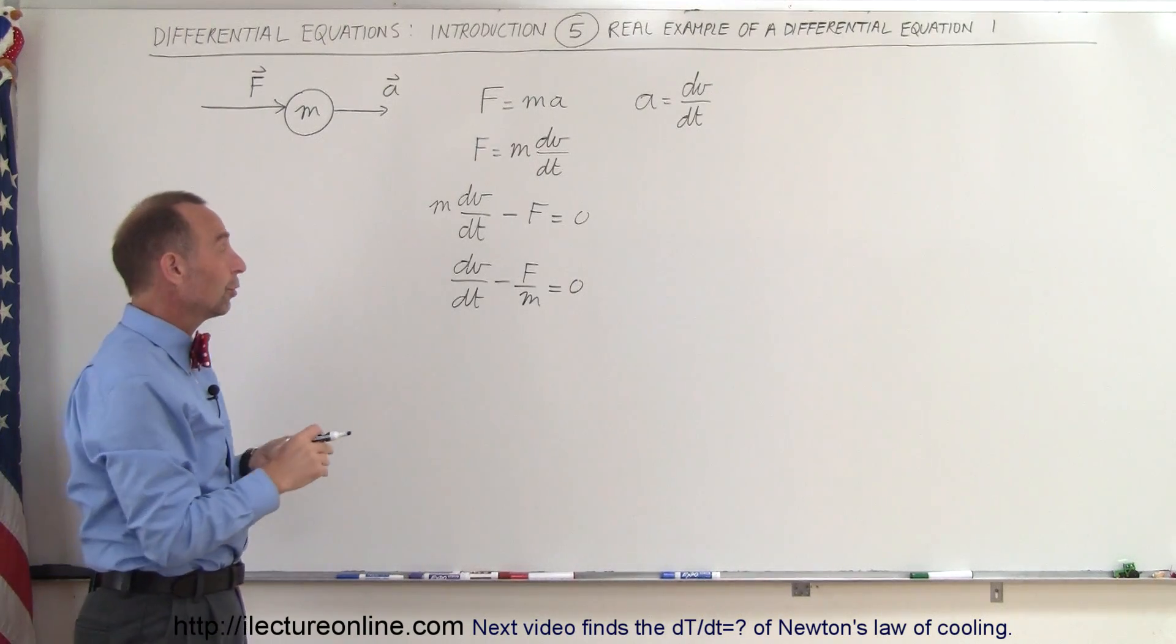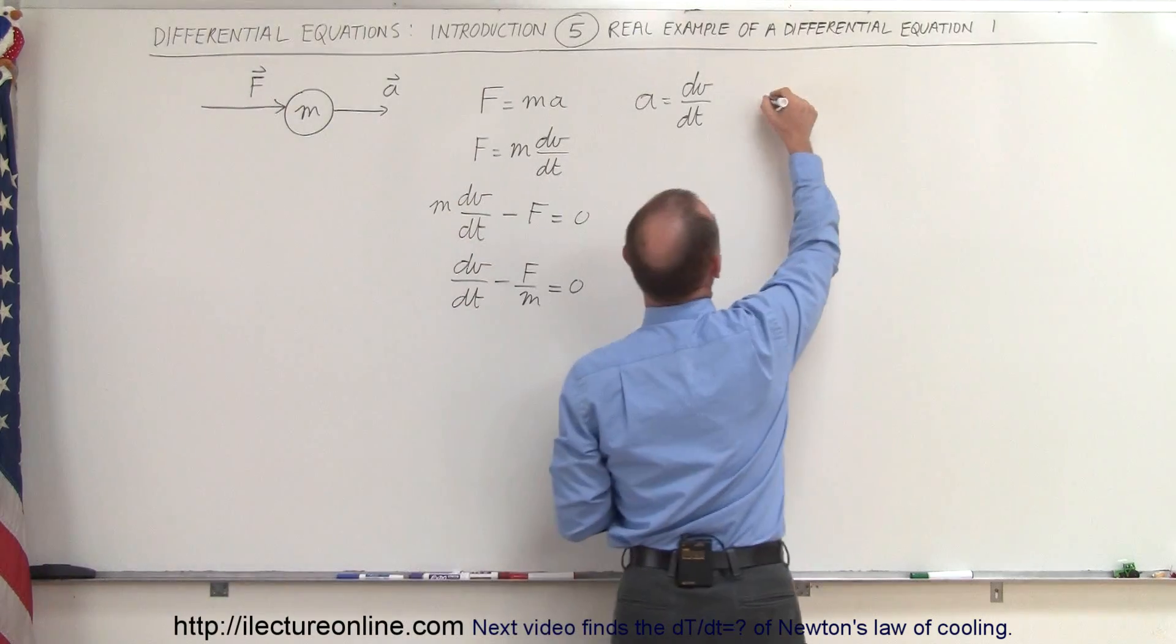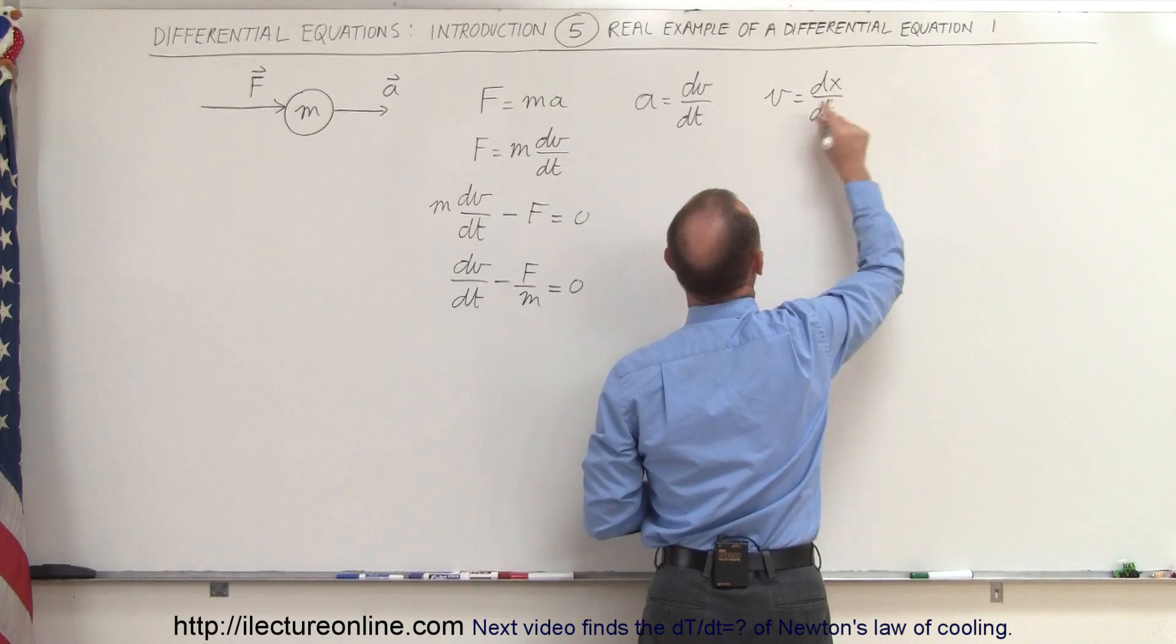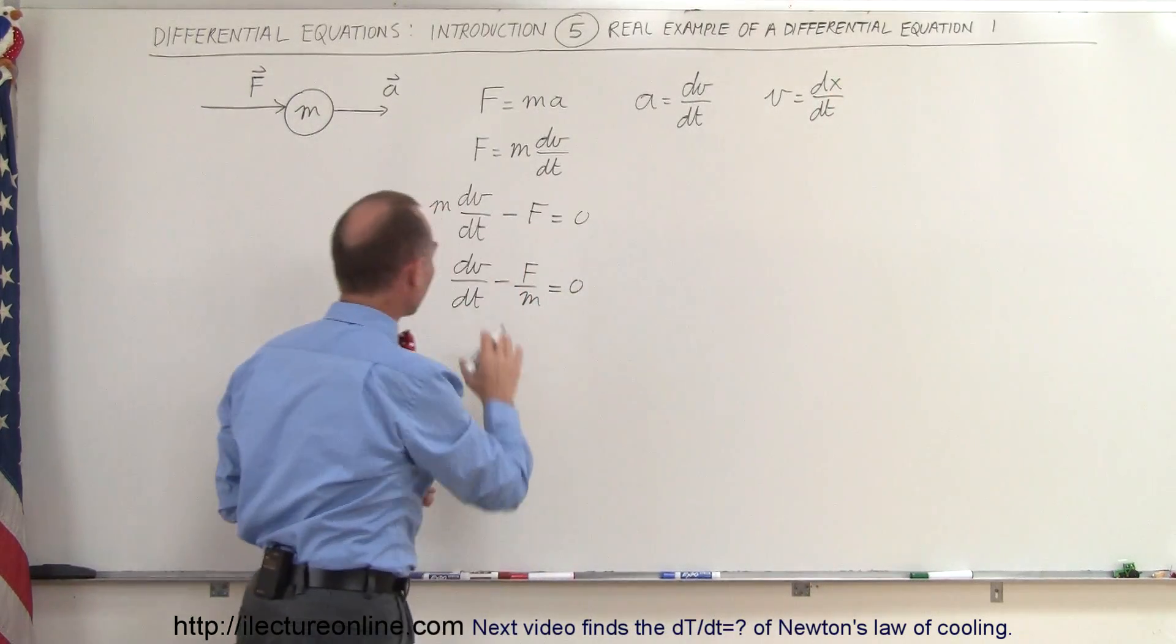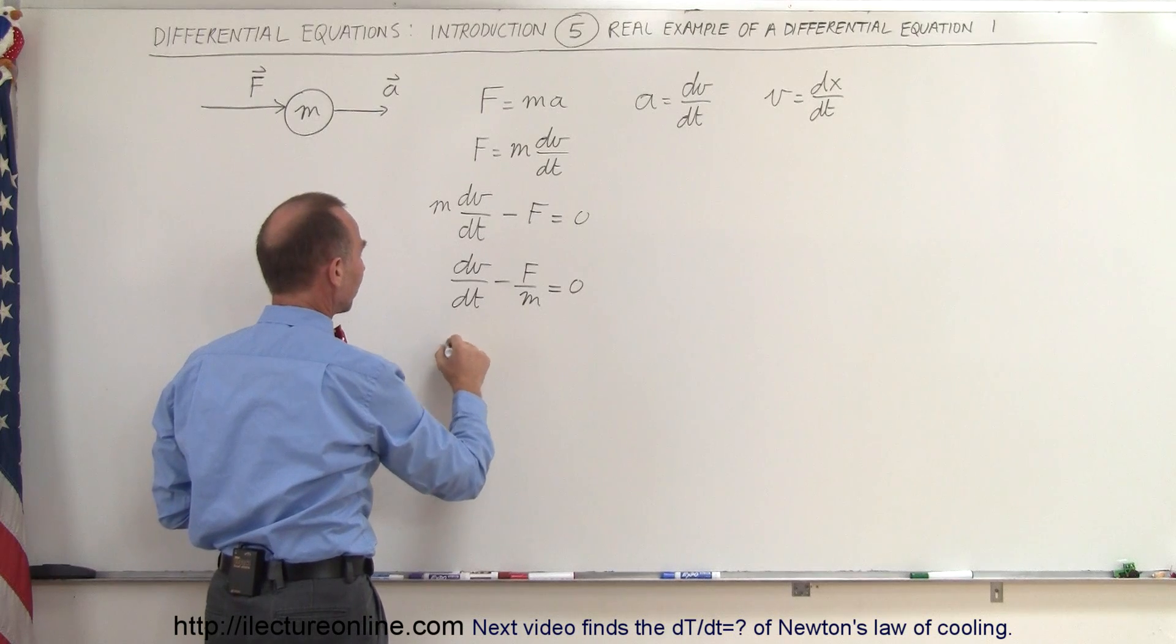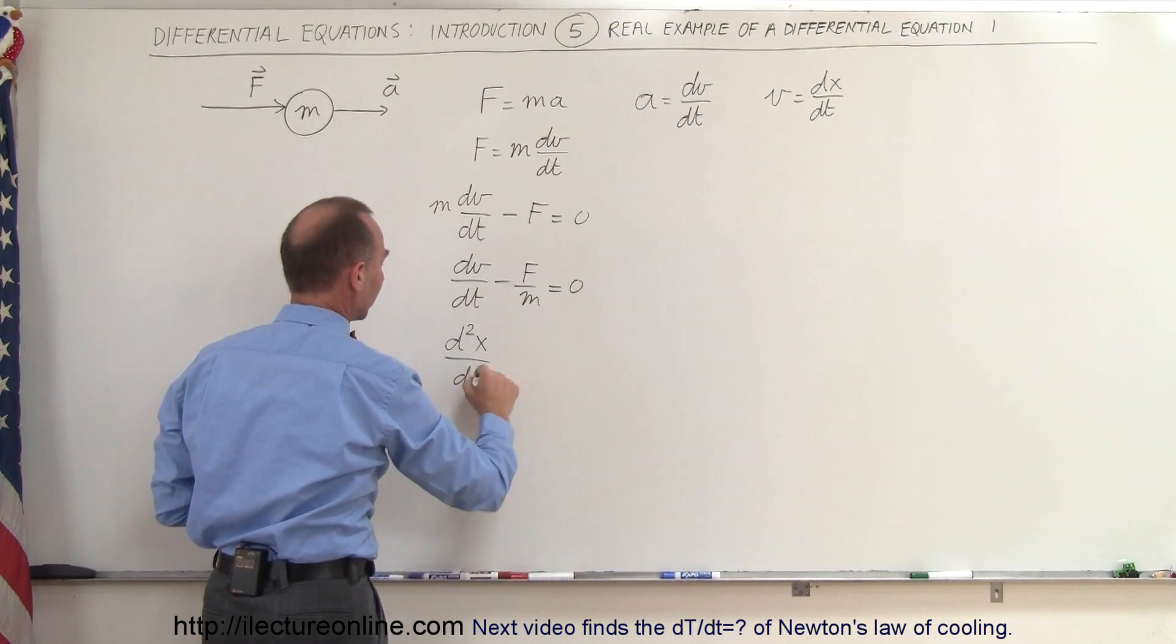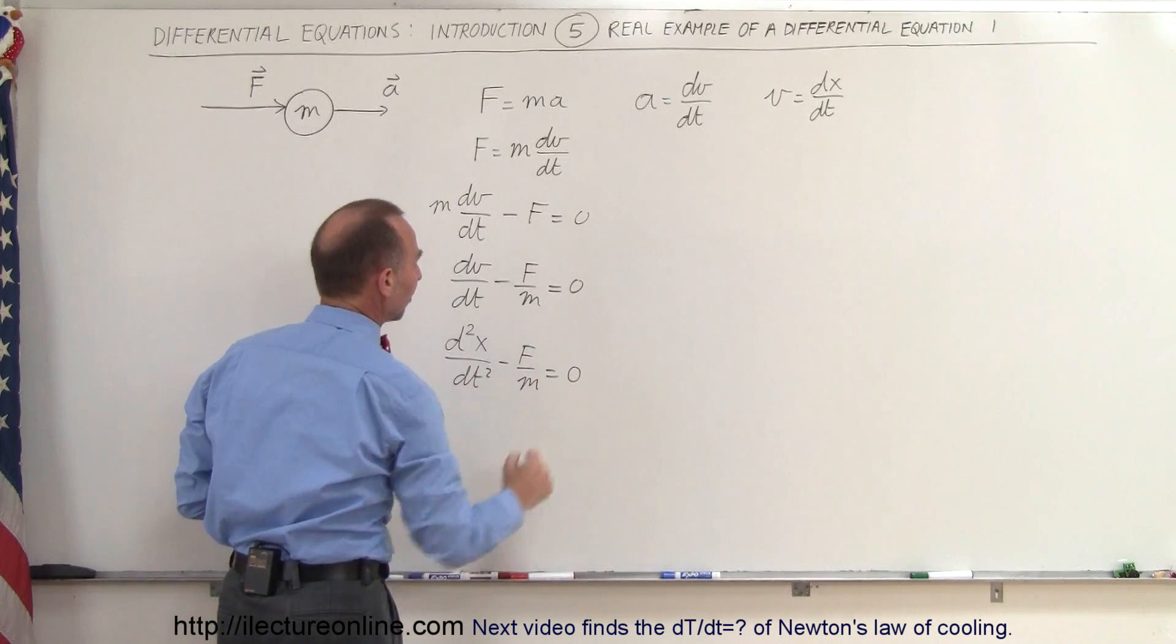Now what we could also do is we can turn this into a second-order differential equation by realizing that v is equal to dx/dt. So v is equal to the change in position with respect to time. If we then plug that in here, this now becomes a second-order differential equation. We can write this d²x/dt² minus f over m is equal to 0.